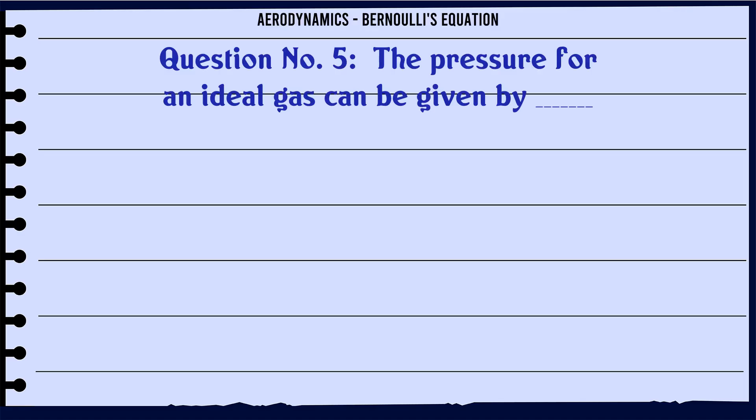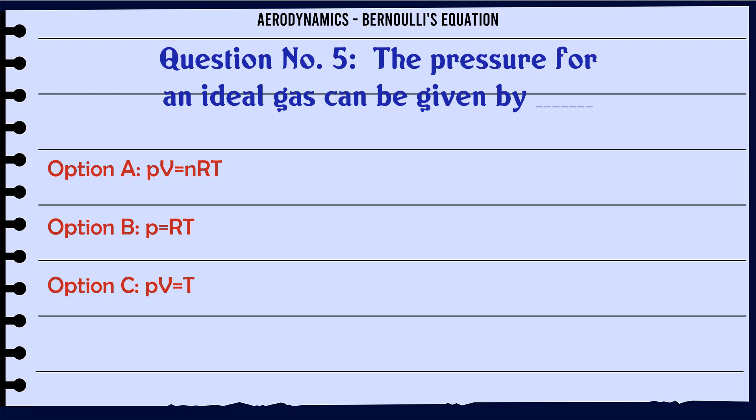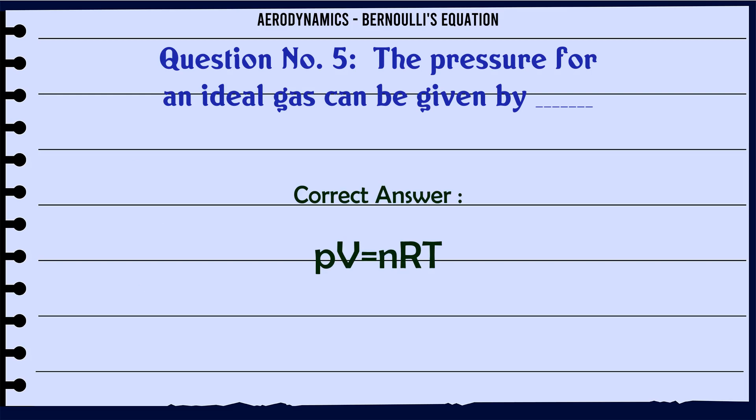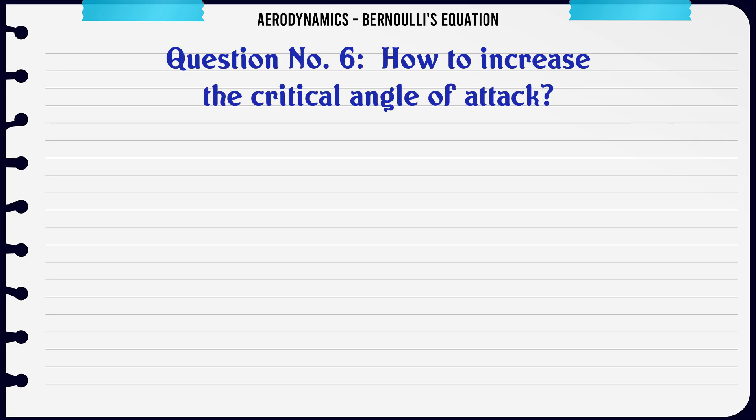The pressure equation for an ideal gas can be given by: A. PV = nRT, B. P = ρRT, C. PVT, D. PVT. The correct answer is PV = nRT. How to increase the critical angle of attack?